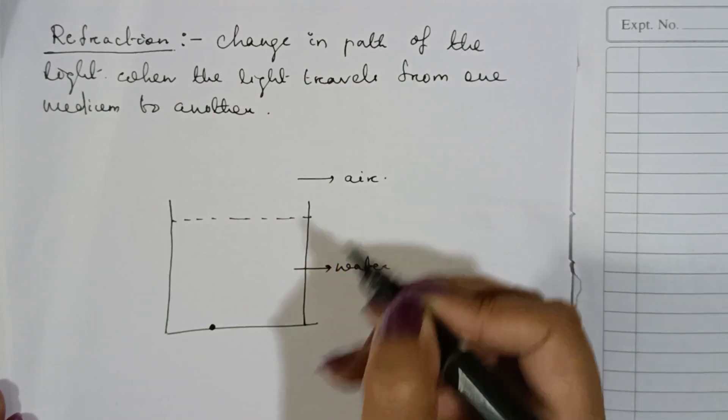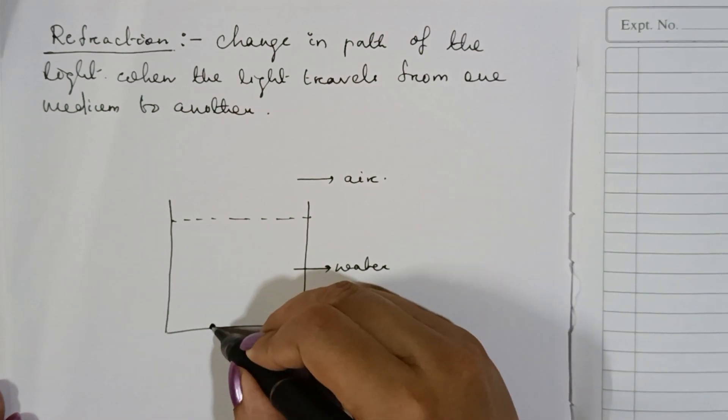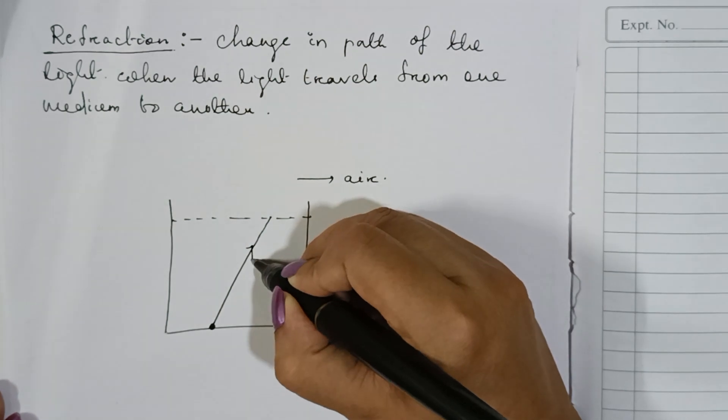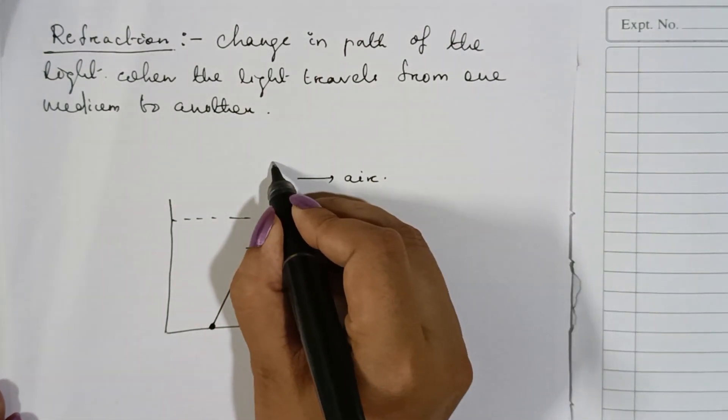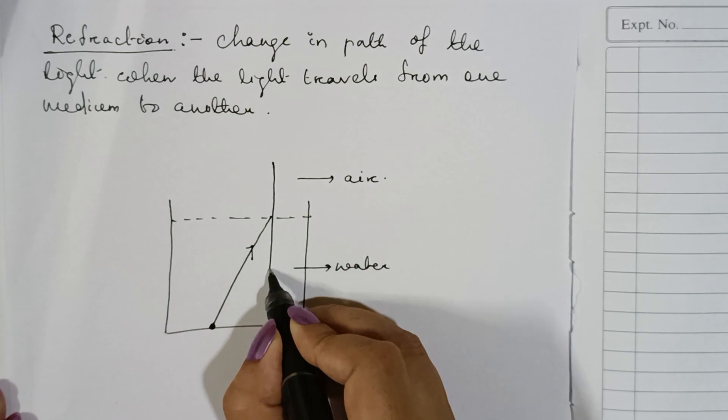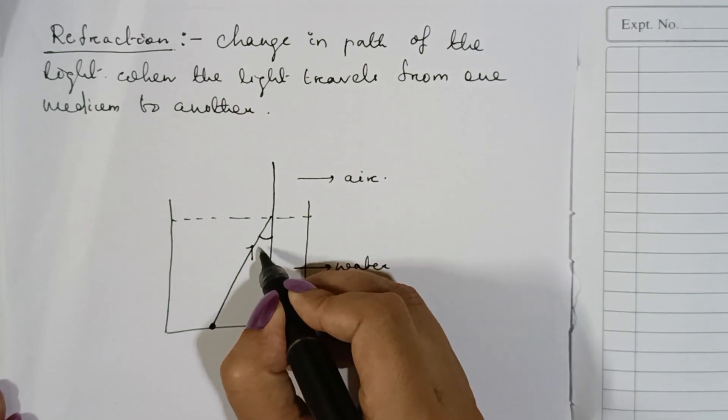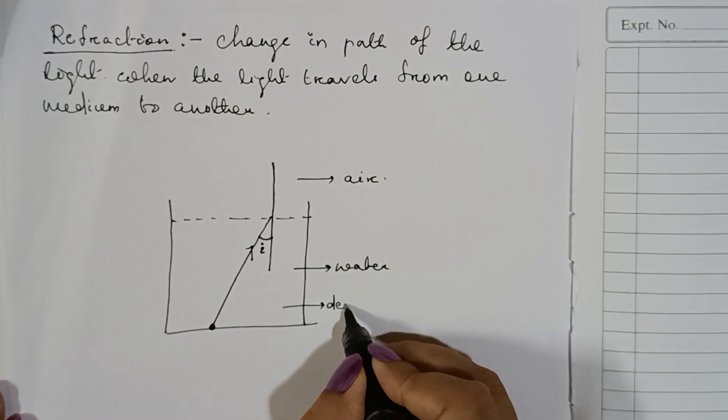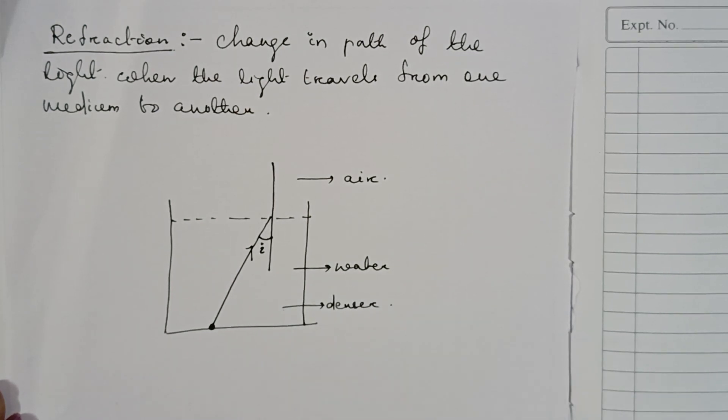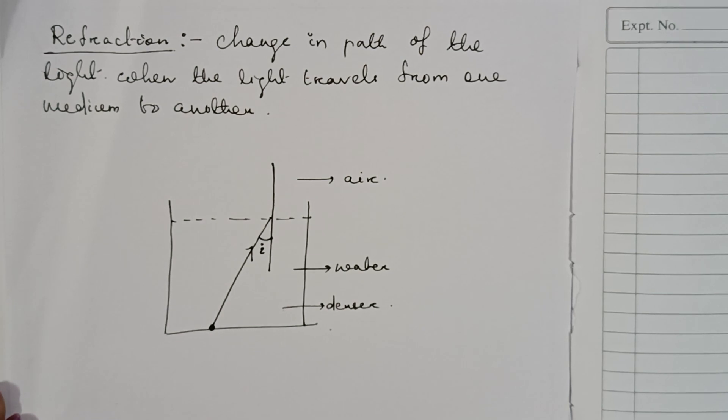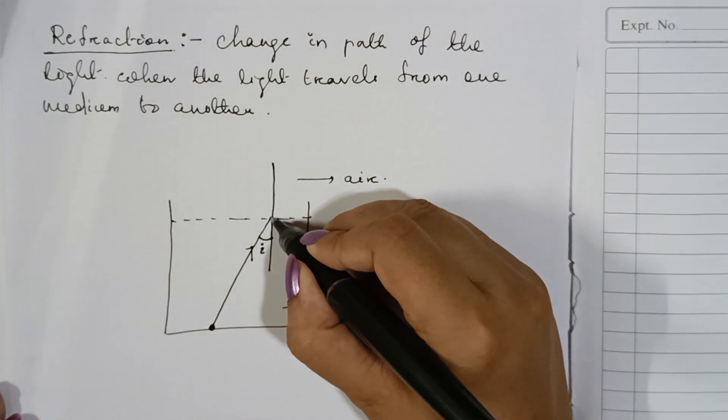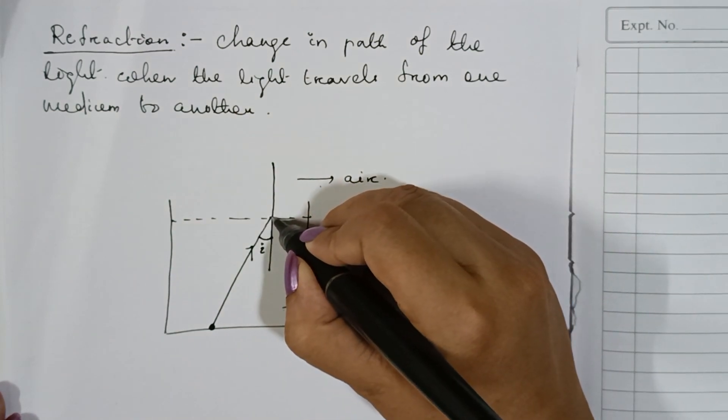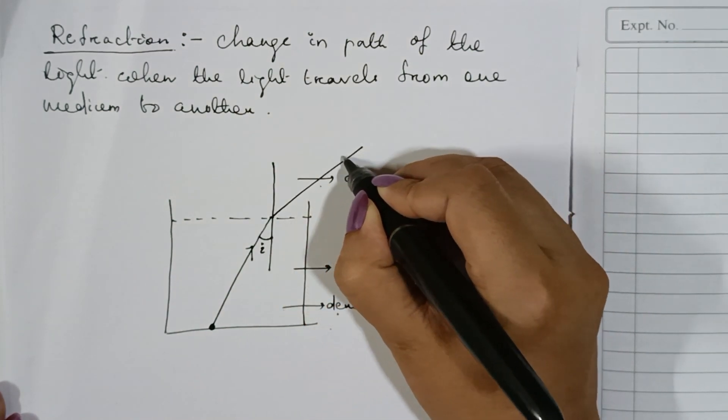The medium is air. Now suppose here there is an object and we are taking the light that is coming from the object like this. What happens if you will draw a normal over here? This is your angle of incidence. In which medium? This is your denser medium. Water is a denser medium. Optically denser medium. So whenever the light travels from denser medium to rarer medium it bends away from normal. These things you need to remember.